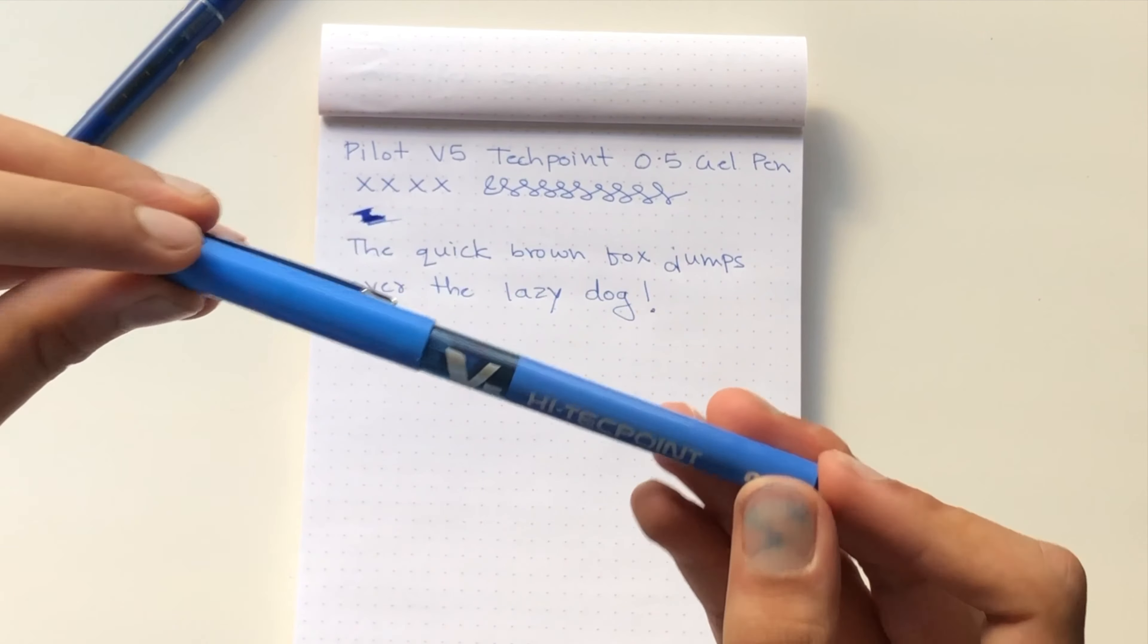In gel pens, what I notice is there's not a lot of troubleshooting. This is definitely noticeably thicker, the 0.7 compared to the 0.5.